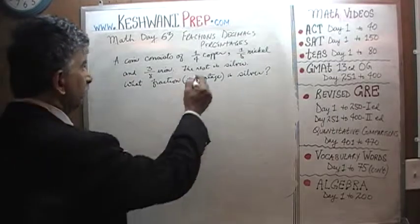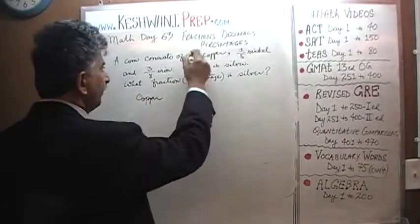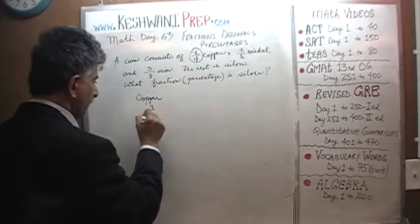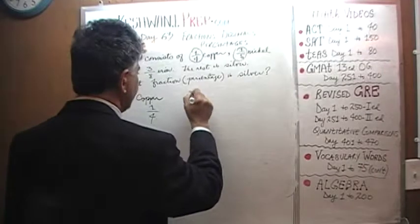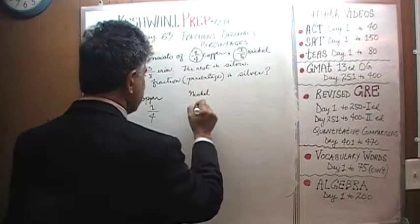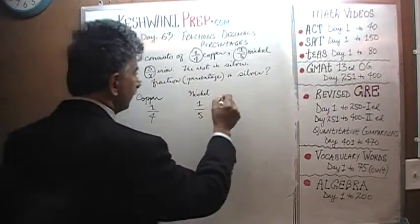Alright. Here is what we are told. We have copper which is one quarter. Then we have nickel which is one fifth. Then we have iron which is three eighths.